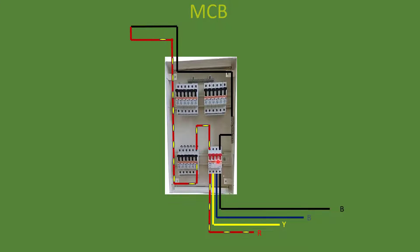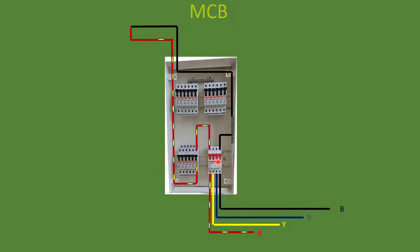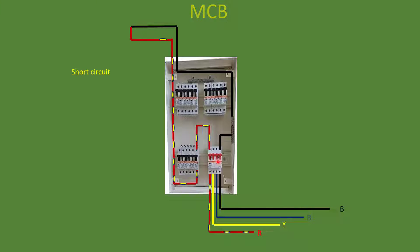Another type of protection is short circuit protection. A short circuit may occur because of faulty insulation. In this condition, an unimaginably large current will enter the circuit and the MCB will trip. In short circuit situations the MCB also trips. This protection is called short circuit protection.